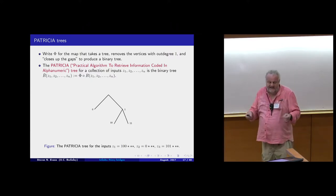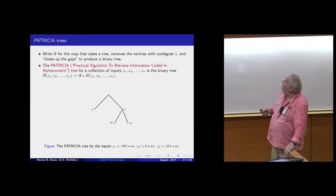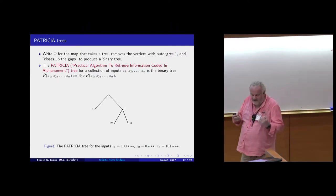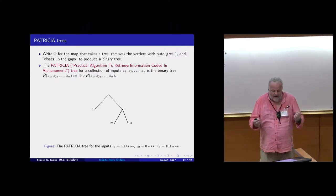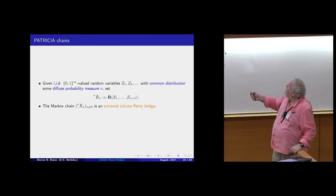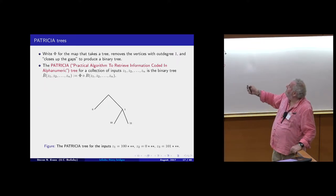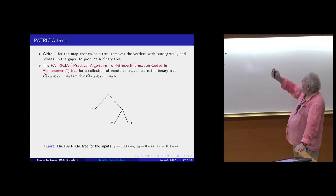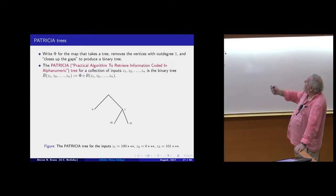This observation is the basis of the Patricia algorithm. Let's write φ for the map that takes a tree, removes the vertices of degree one, and closes up gaps so that you end up with a binary tree. Composing the map that gives you a radix sort tree with that cleaning-up map φ gives you the Patricia map R-bar.